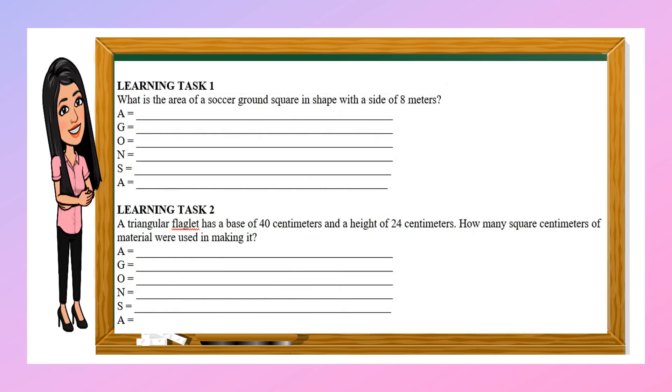So for your learning task 1, what is the area of a sacred ground square in shape with a side of 8 meters? Learning task 2, a triangular flaglet has a base of 40 centimeters and a height of 24 centimeters. How many square centimeters of material were used in making it?